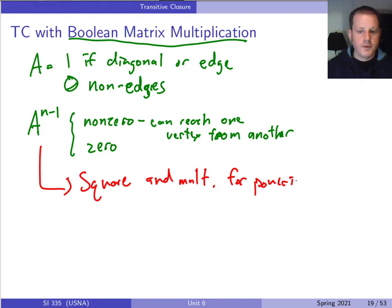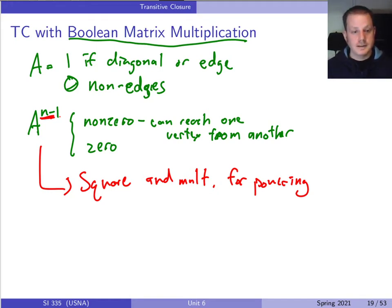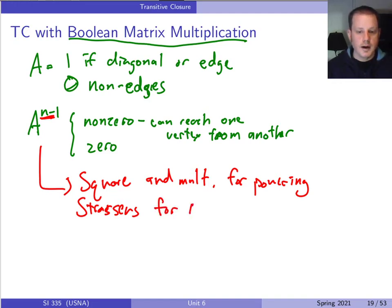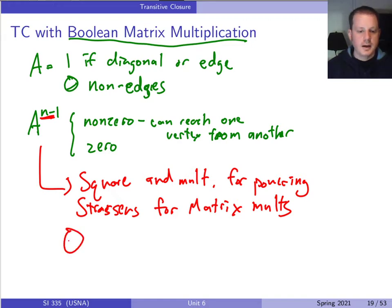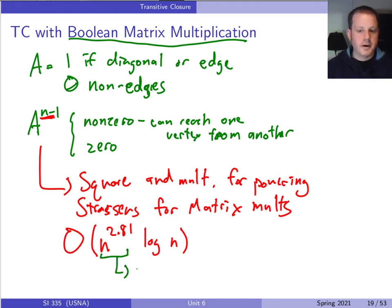The key to computing this quickly is to use square-and-multiply for the powering — an algorithm we first saw with RSA. Instead of needing n steps to compute the power, we only need about log(n) steps. We also use Strassen's algorithm (or another fast matrix multiplication) for the matrix-matrix multiplications. Combining both, the runtime is approximately n^2.81 × log(n), and the n^2.81 part can be even faster with more recent algorithms.